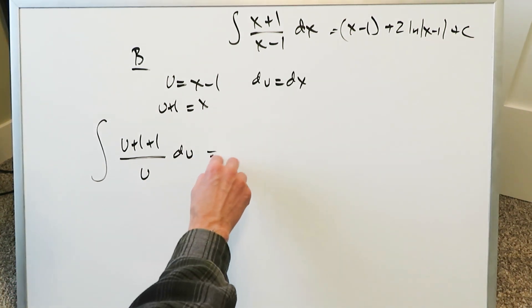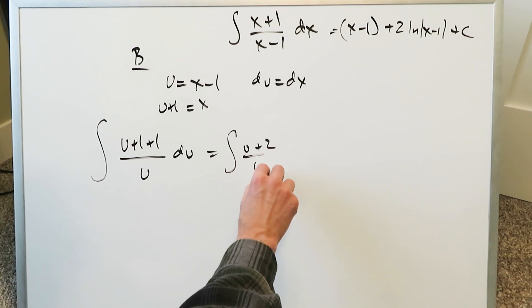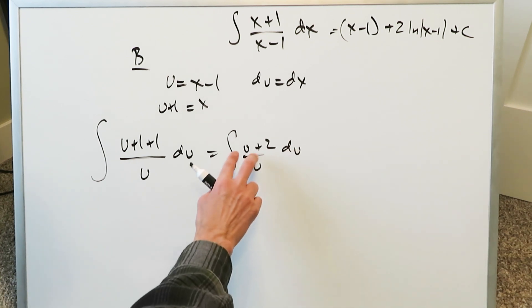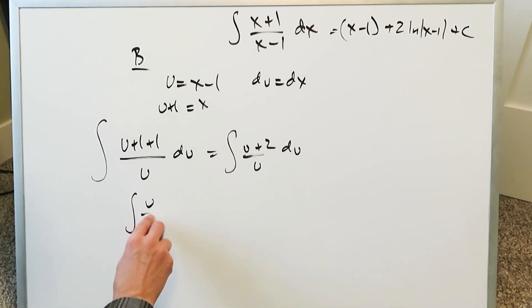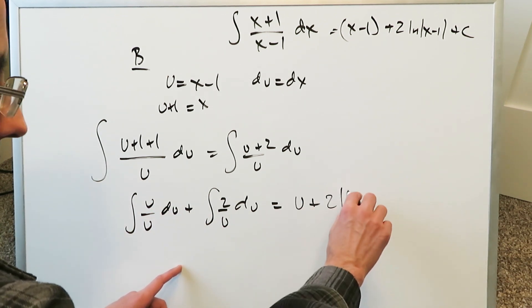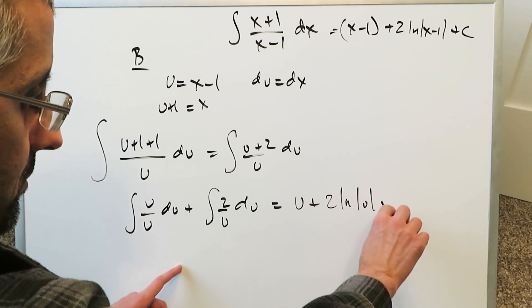When you combine all of this what do you have? You have a u plus 2 over u du. And now separate these across a positive sign. You have a u over u du plus 2 over u du. When you do the integration of this, this is just a 1. You're getting a u from there as an antiderivative. When you're doing this you're getting a 2 natural log u plus c.